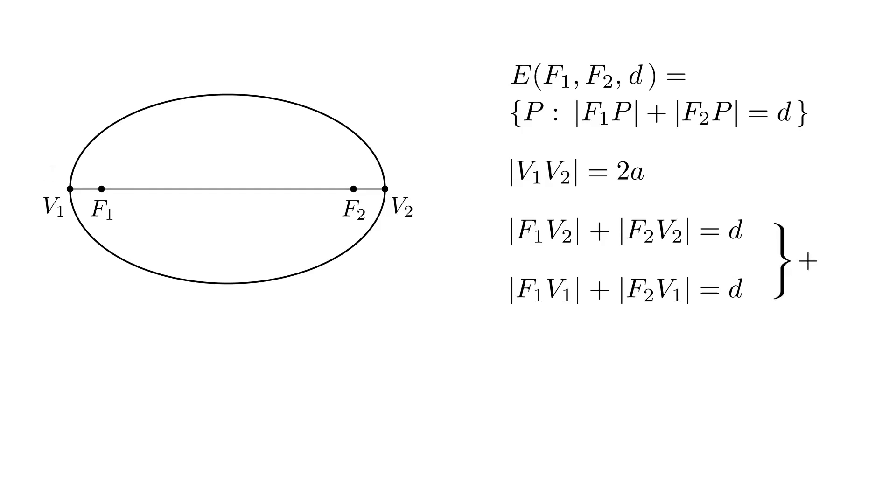Now we'll add these two expressions. First, we'll add the two leftmost terms. If we look at the image, we see that F1V2 plus F1V1 adds up to V1V2. Similarly for the other two terms, they also add up to V1V2. We have that V1V2 plus V1V2 equals d plus d, which means that V1V2 equals d.